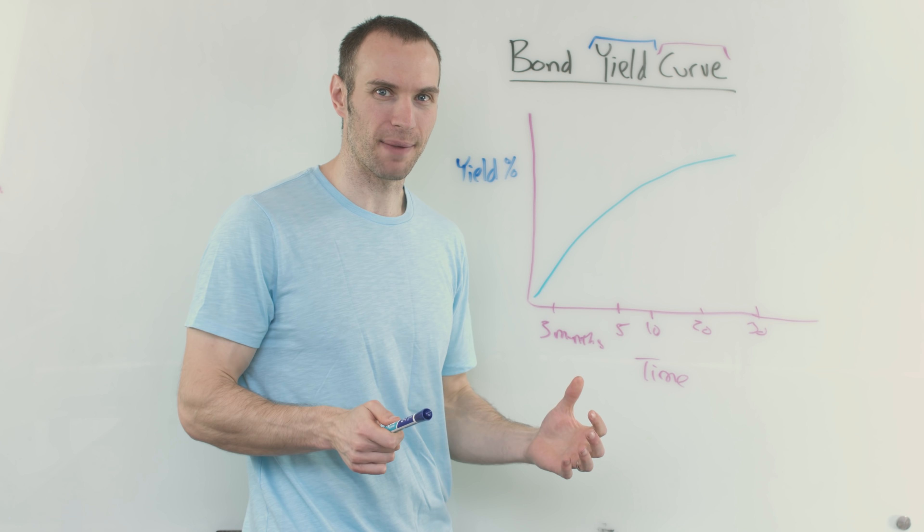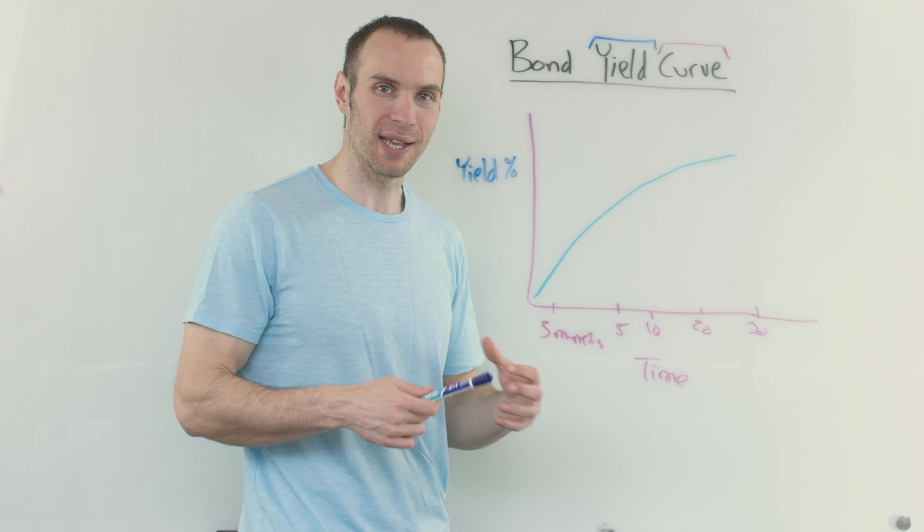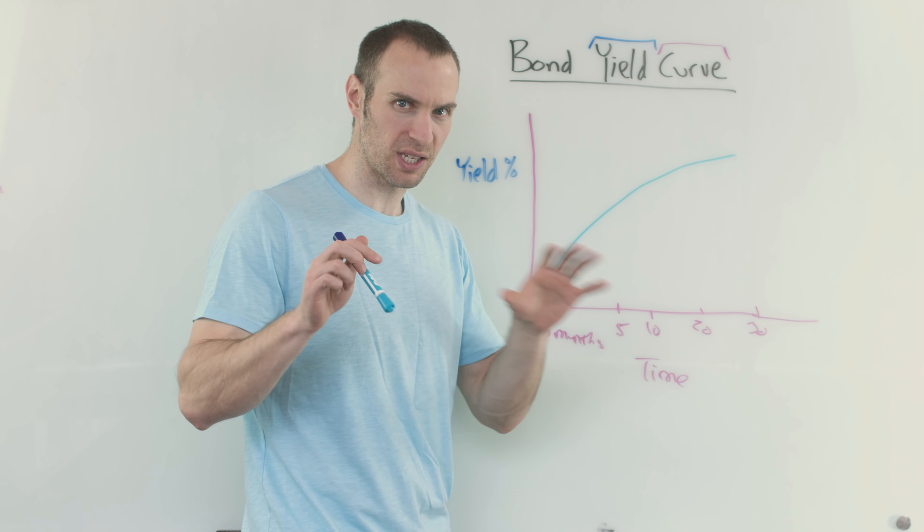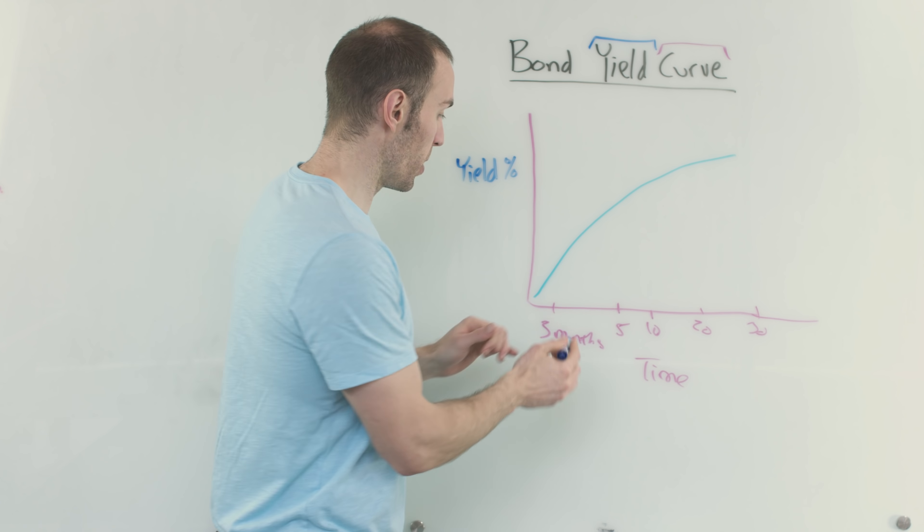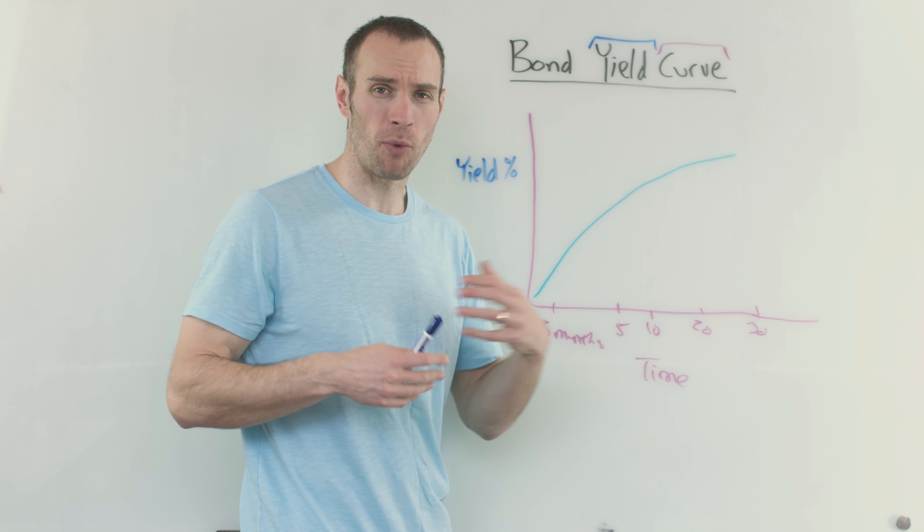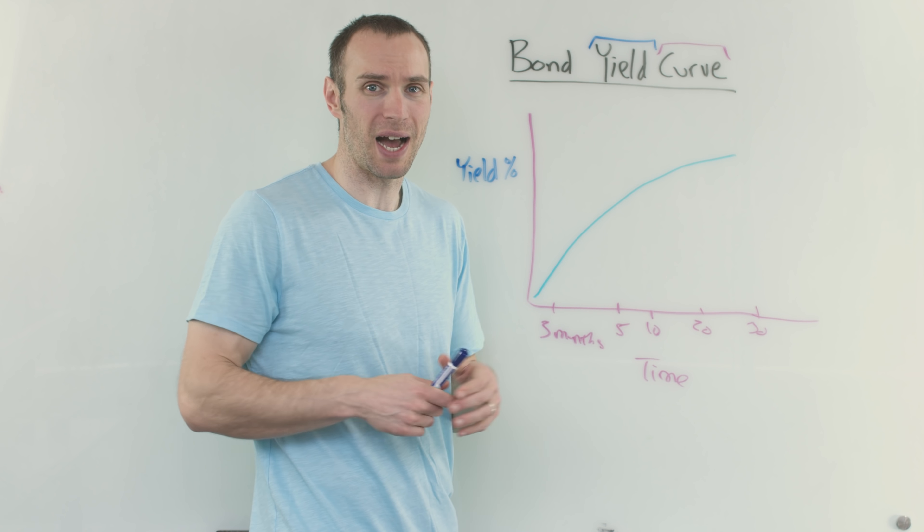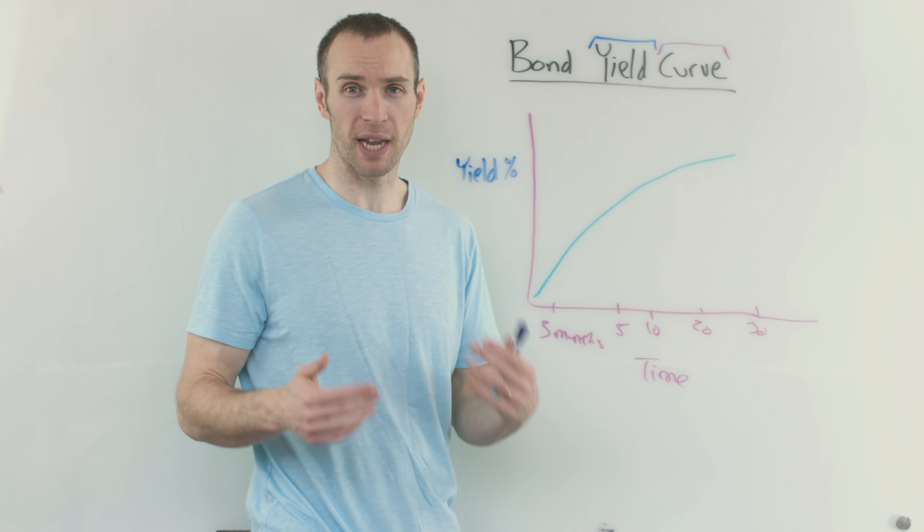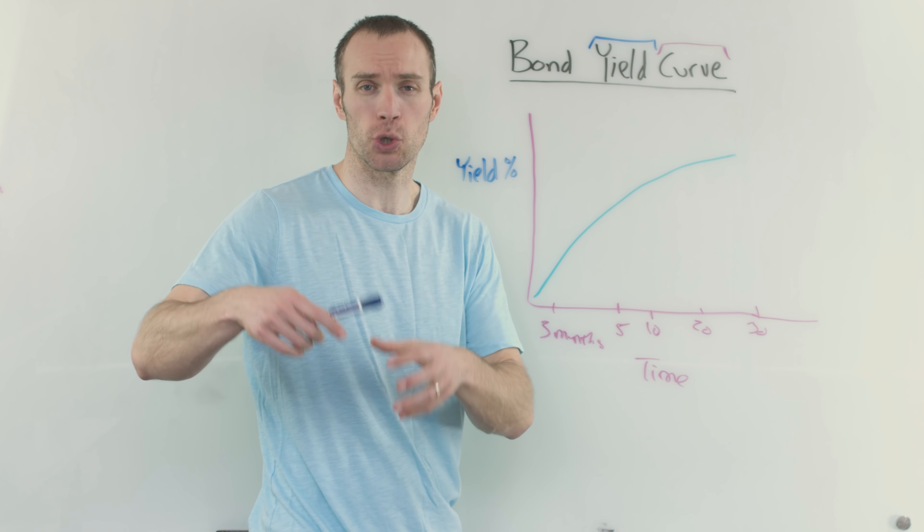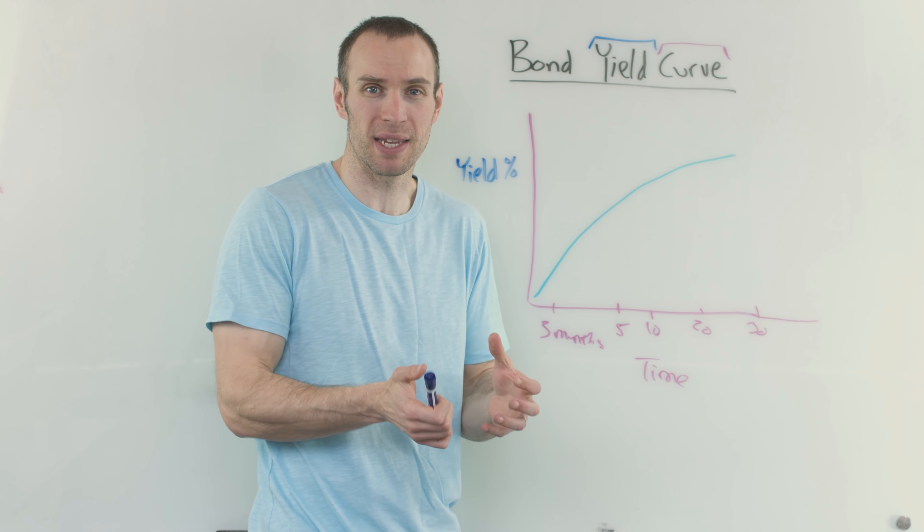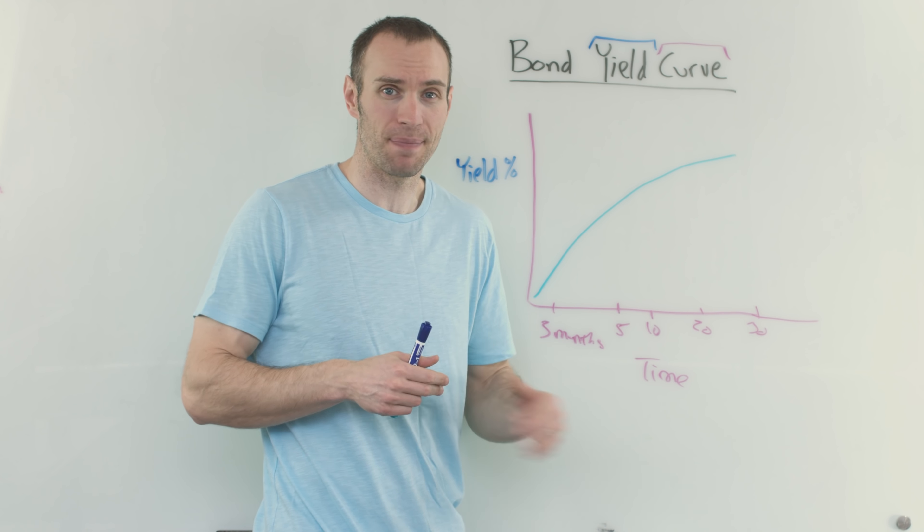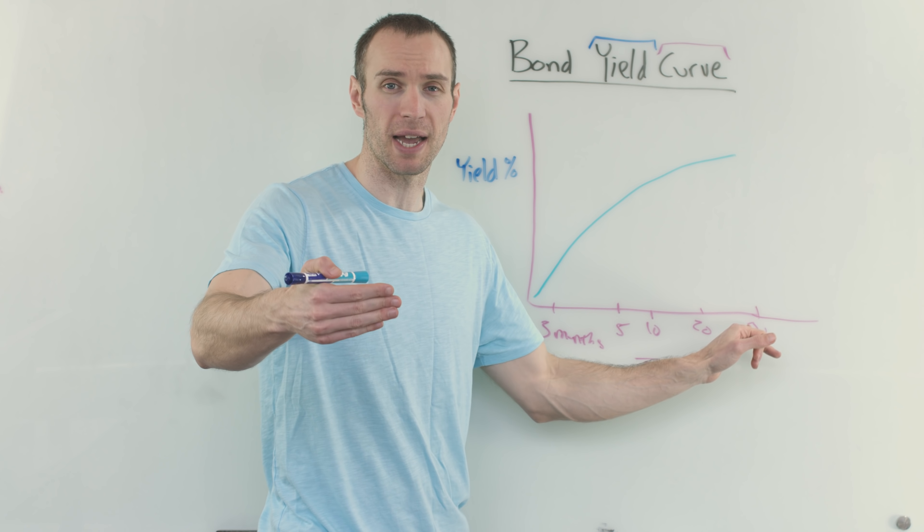But why does it look like that? Well, there are more risks normally. This is why things can get weirder when you have an inverted yield curve, which I'll get to in another video, but normally, the longer you hold on to something, you're exposing yourself to more risk, which I'll talk about. And because there's more risk, people need a higher reward, people need a higher yield percentage to compensate for that additional risk that is being taken on. Where is that additional risk being taken on from? Well, just in the fact that you're holding that bond for a longer period of time.